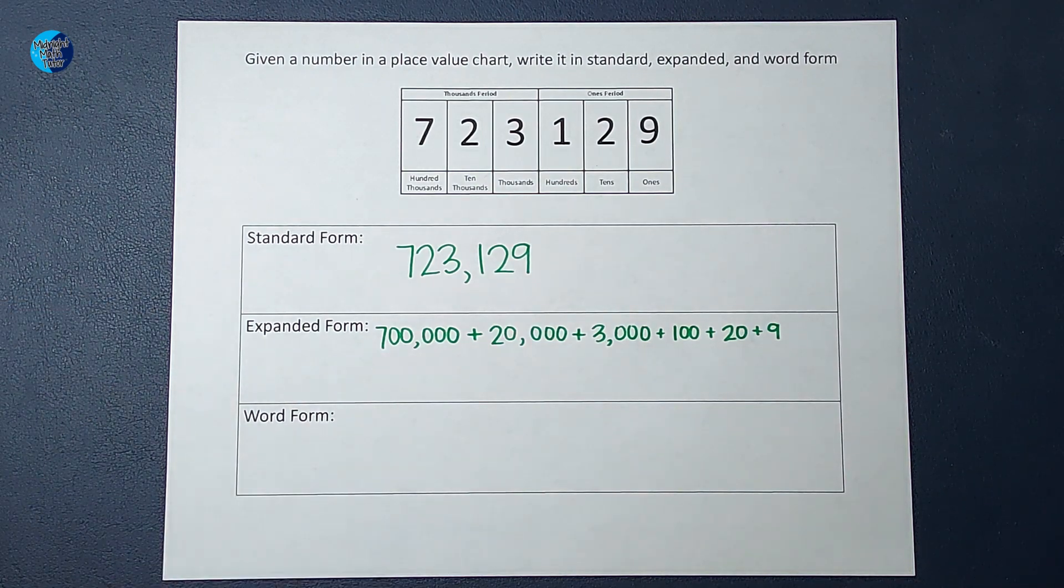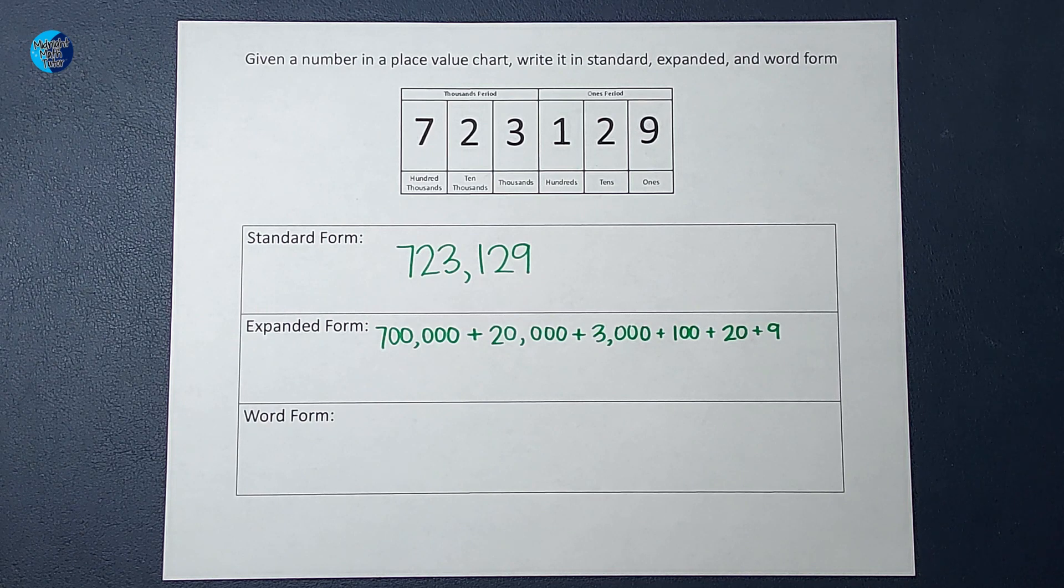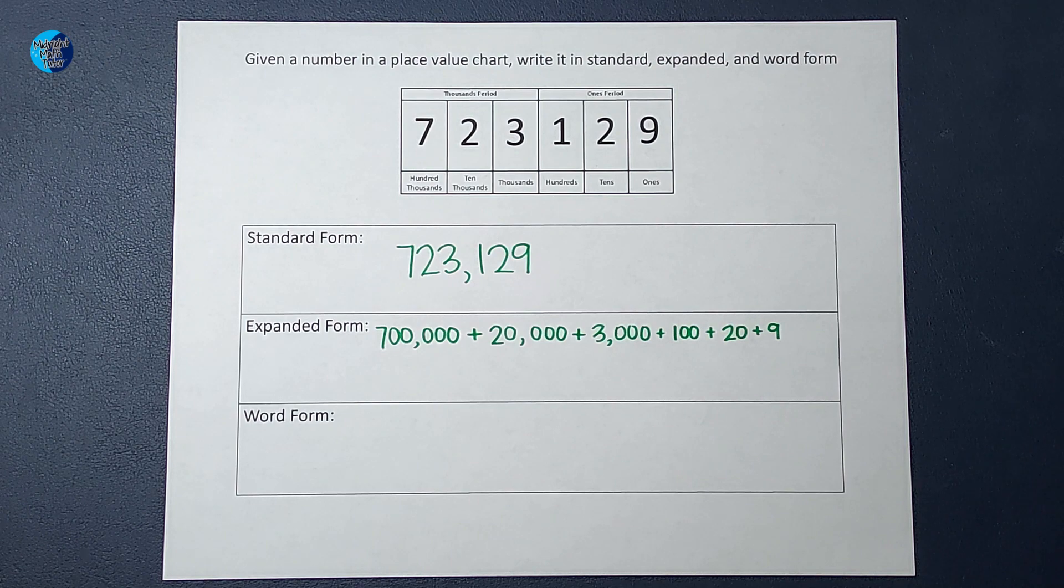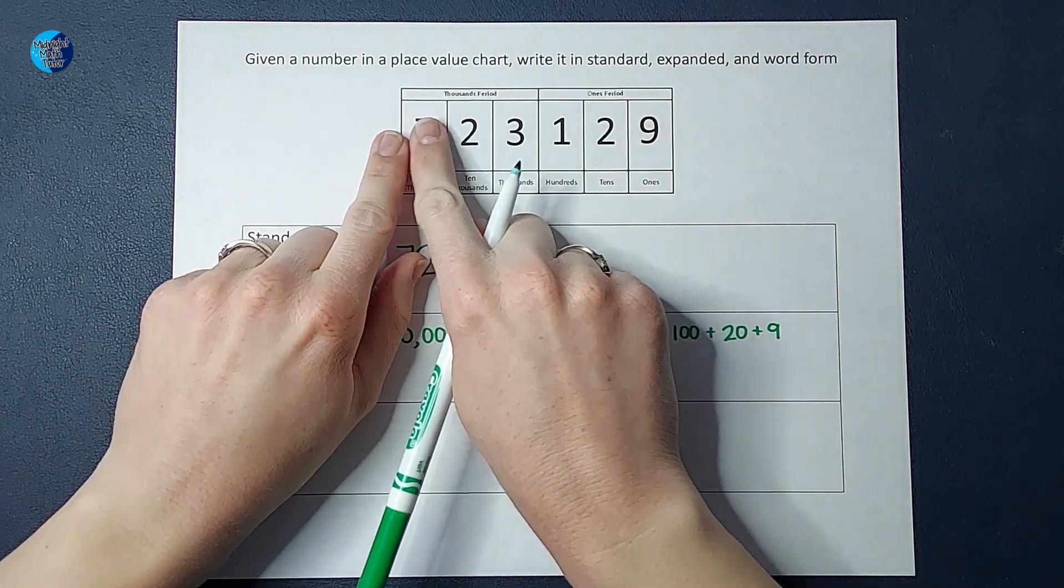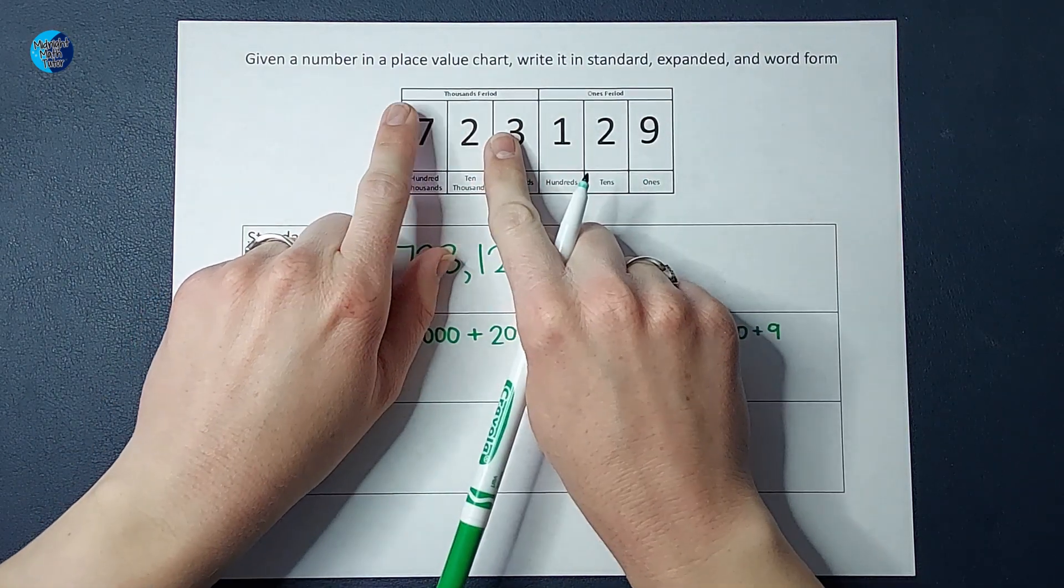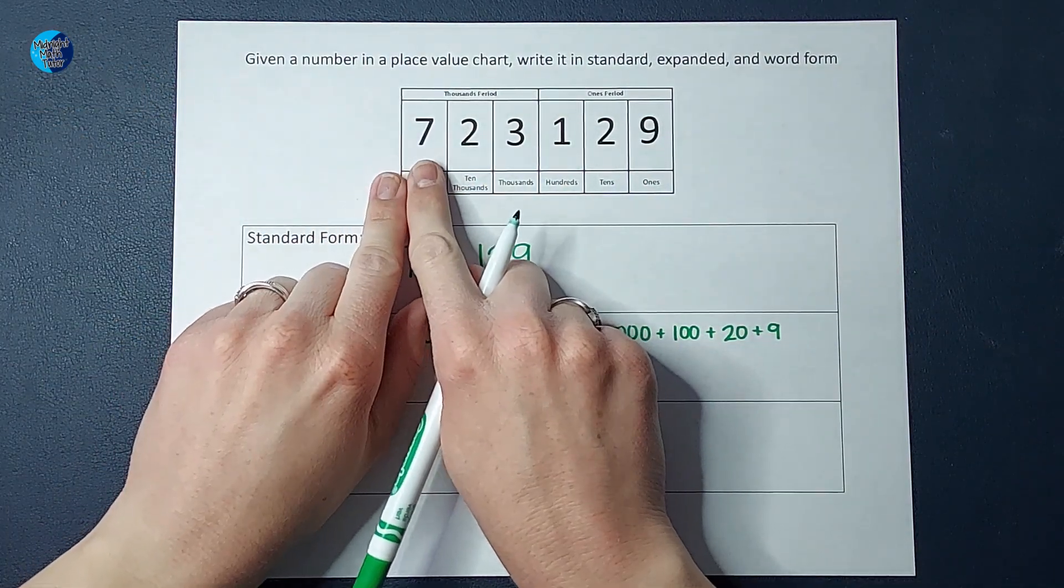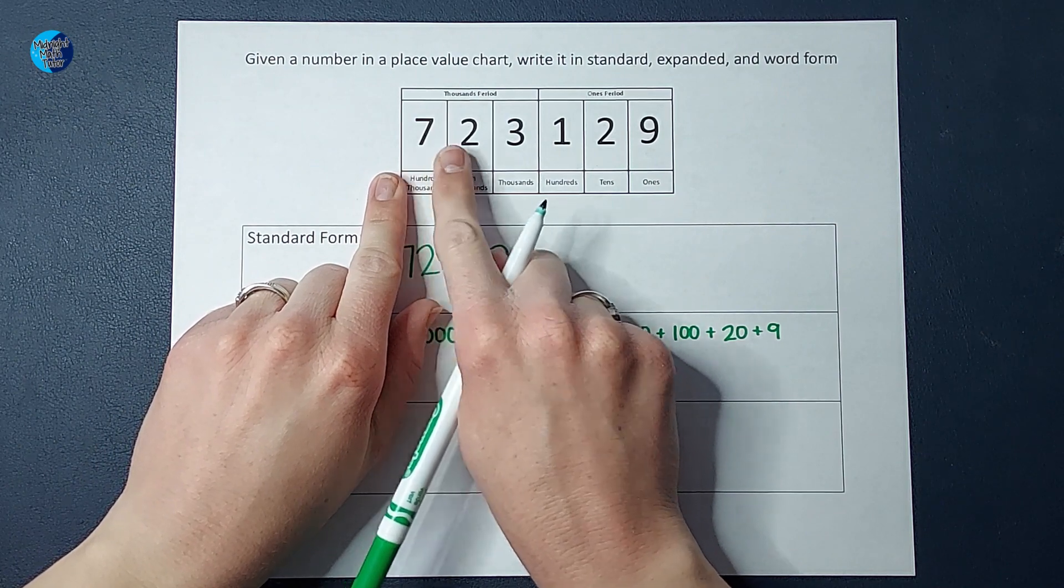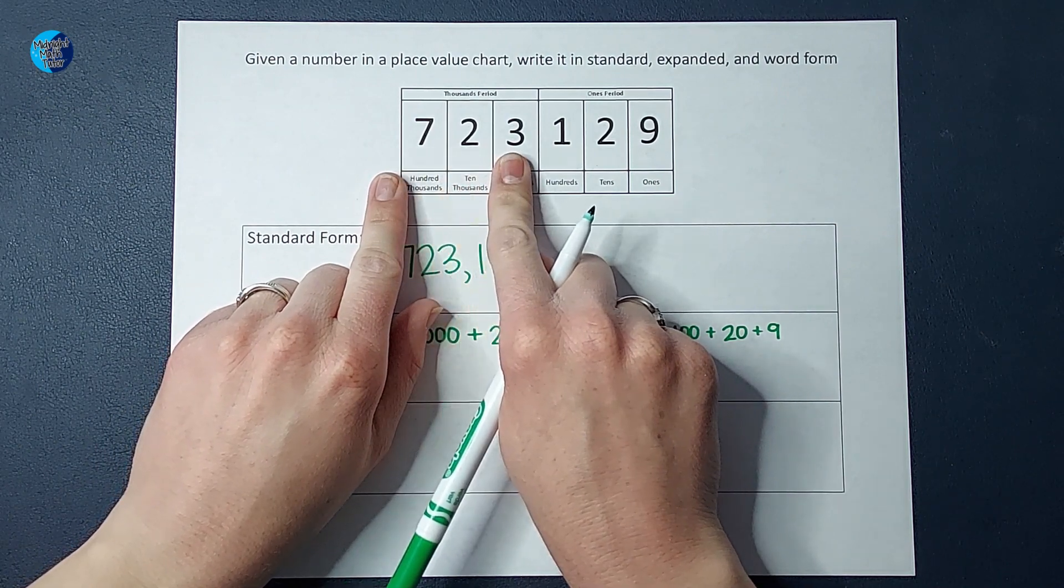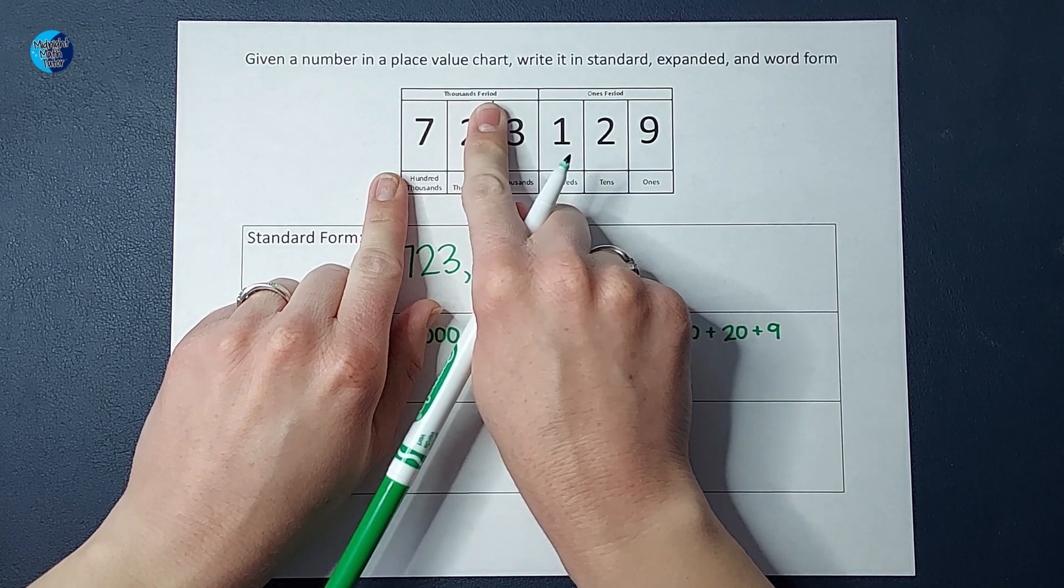All right. Now, word form, you probably guessed. This is writing out what the number is if I were to say it out loud, which I know can be kind of annoying to write out. But hopefully, it'll help our students understand how to say these big numbers. If they are having a hard time with that, these ones on top can help. So, for example, after I say this number, I say what period it is.